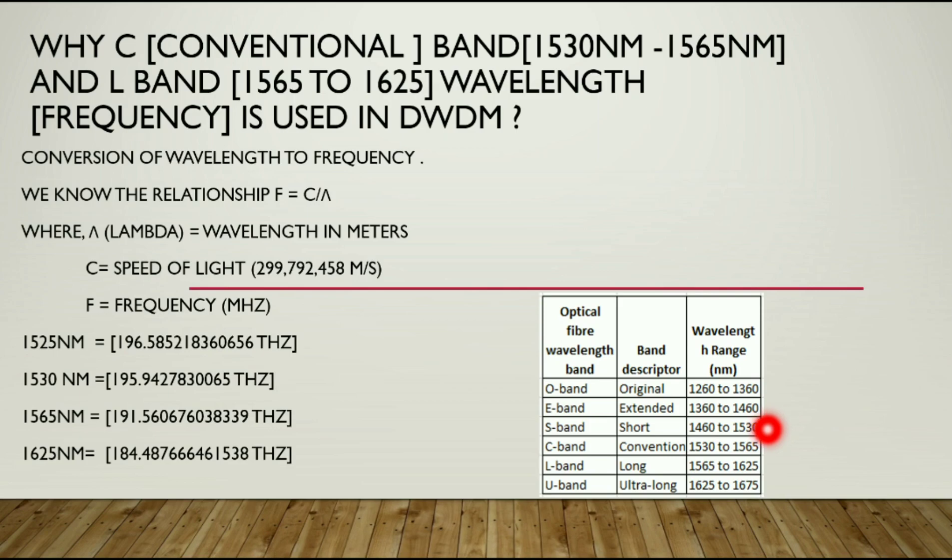These are the different optical bands: O band, E band, F band, C band, L band, and U band. C band and L band are mostly used in the DWDM system and we will discuss why.